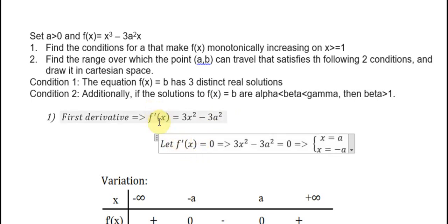We put the first derivative equal to 0. We have 3s power 2 minus 3a power 2 equal to 0. From this we get s equal to a and s equal to minus a.